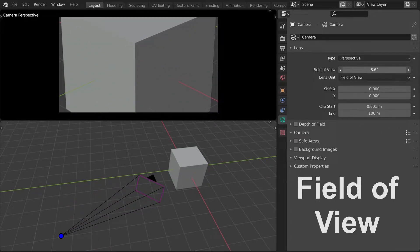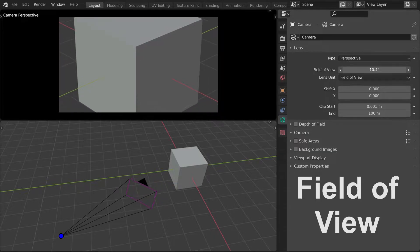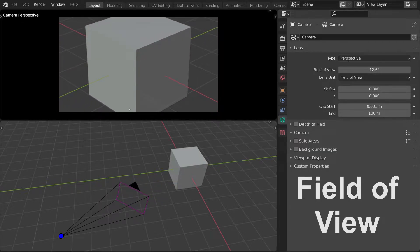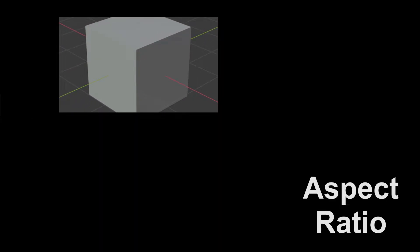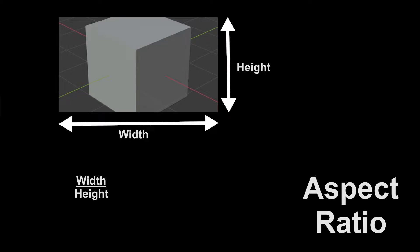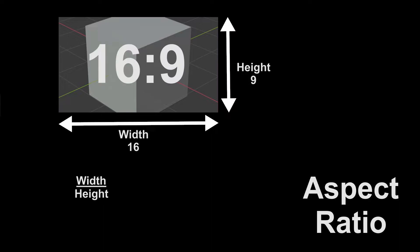Another important parameter is the aspect ratio of a camera. The aspect ratio is the ratio of the width and the height of the image. For example, a typical aspect ratio of a TV screen is 16 by 9. If you divide 16 by 9, you can also express the aspect ratio as a single floating point number — in this example, 1.7 recurring.